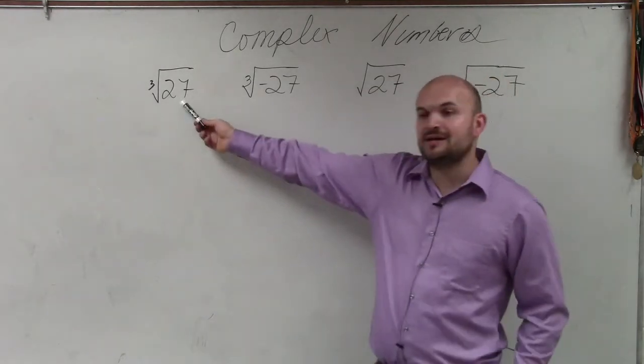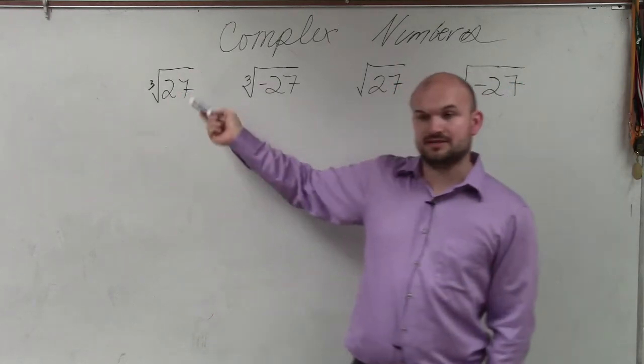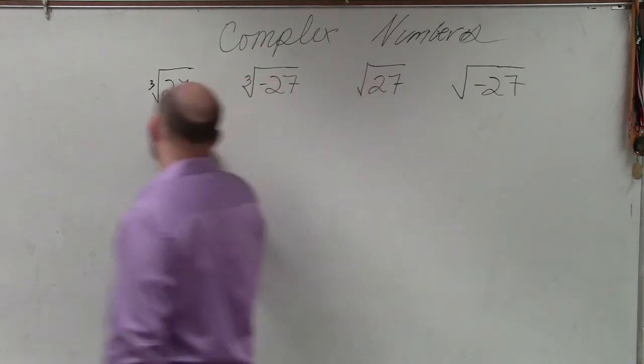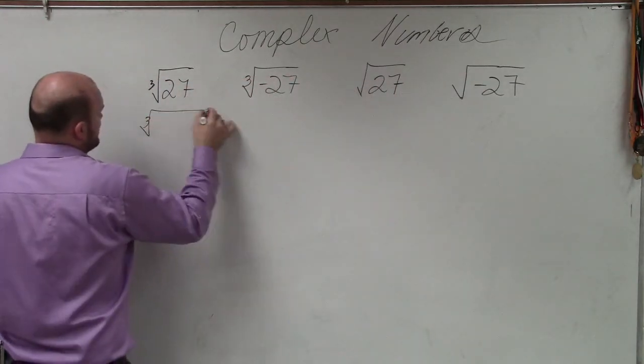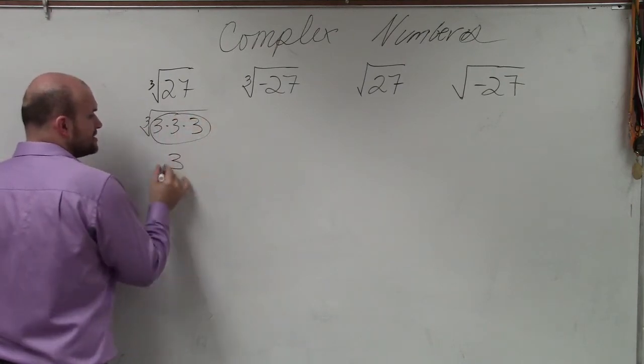So basically, I just want to remind you guys of what the cube root represents. Cube root is what number multiplied by itself 3 times gives us 27. And hopefully you guys can see that that can be written as 3 times 3 times 3. So the cube root of 3 times 3 times 3 is just 3.